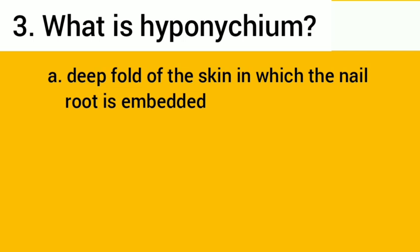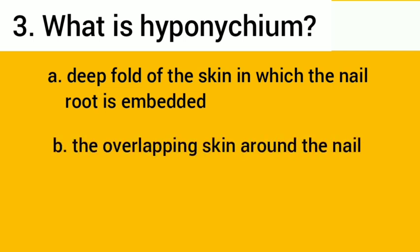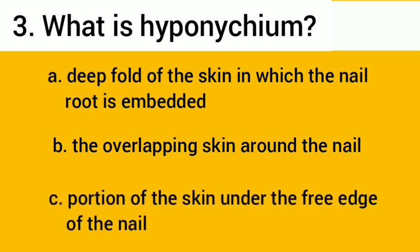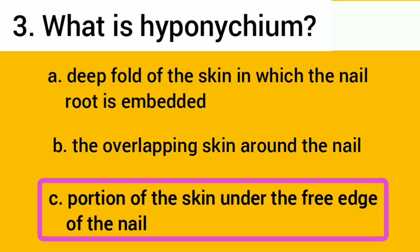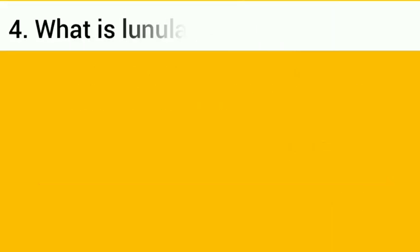Number three: A, a deep fold of the skin in which the nail root is embedded; B, the overlapping skin around the nail; C, the portion of skin under the free edge of the nail.